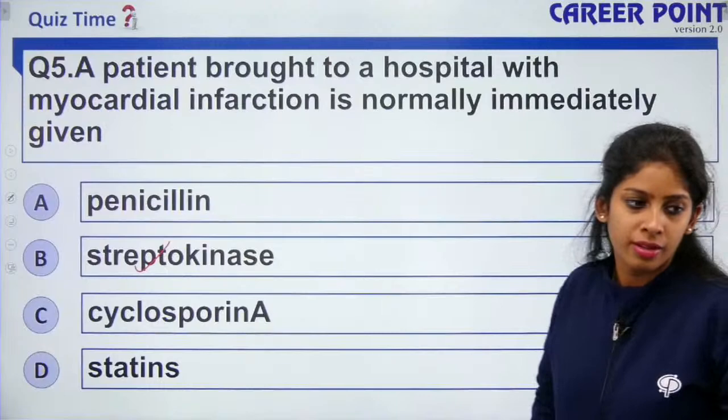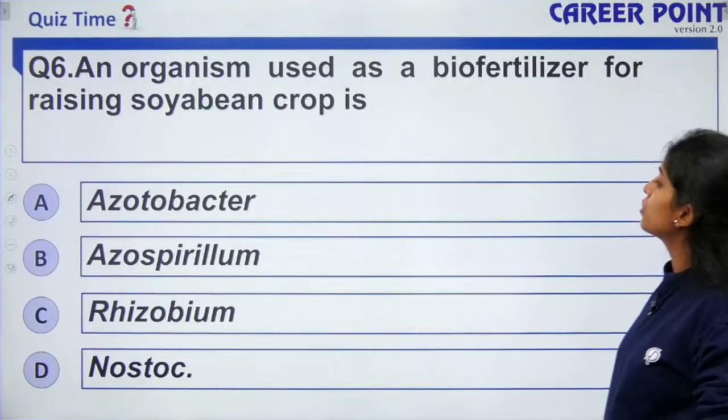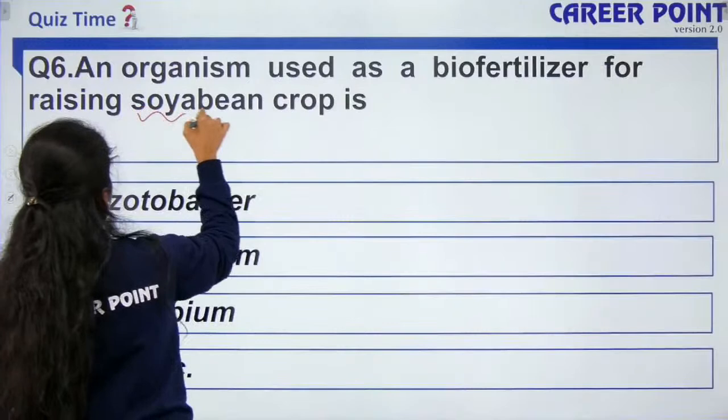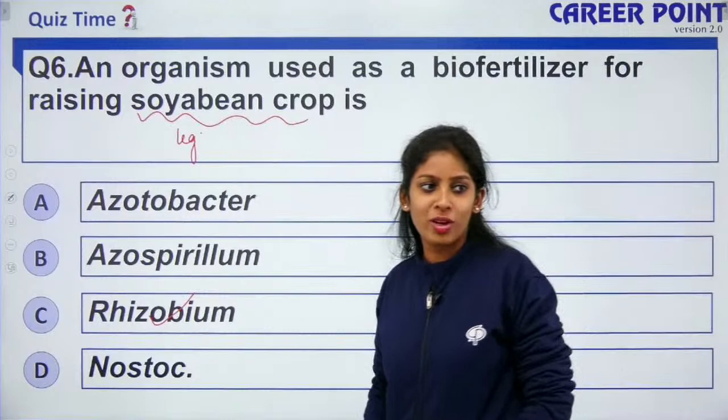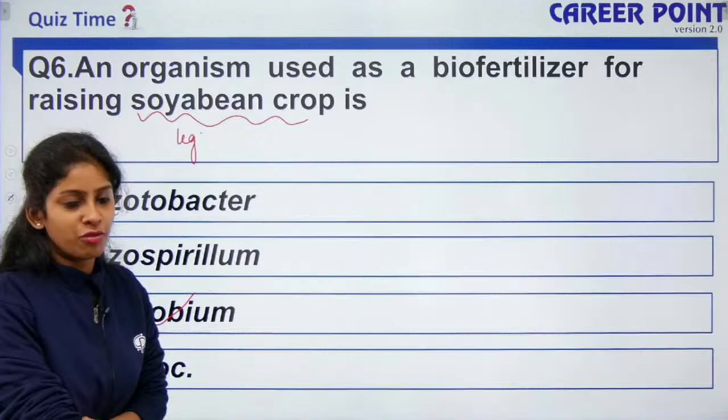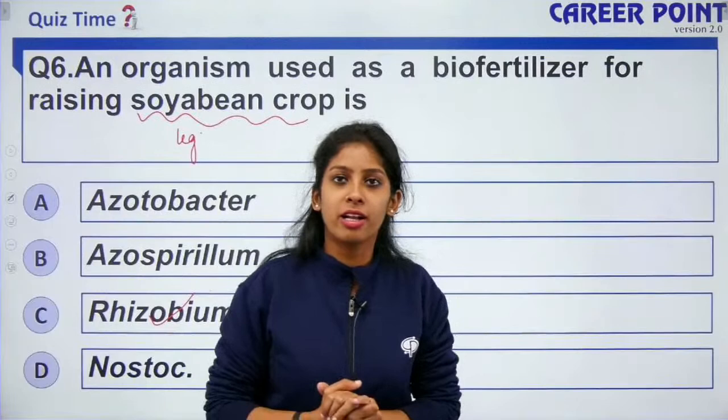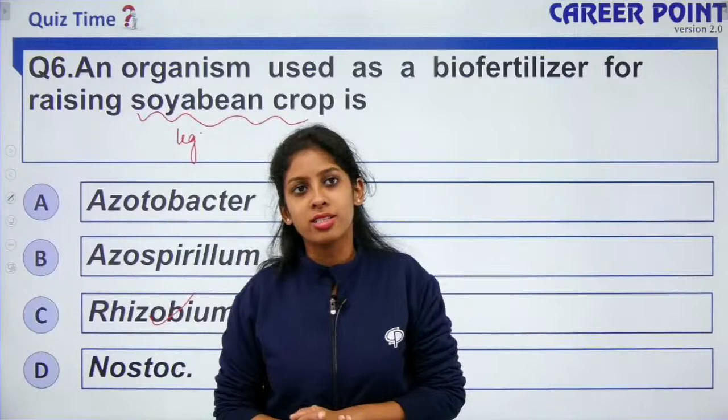Question: an organism fixing nitrogen in soybean crop is rhizobium — soybean is a leguminous crop. Unfortunately there are technical issues with the video. We will continue the microbes chapter tomorrow. Sorry for the inconvenience. We will meet tomorrow at 5 PM — until then stay tuned and take care. Bye.